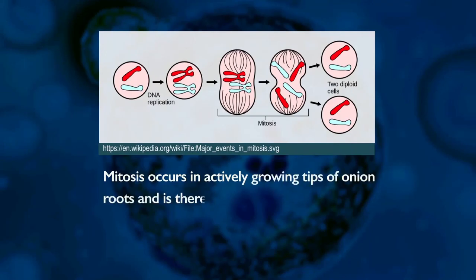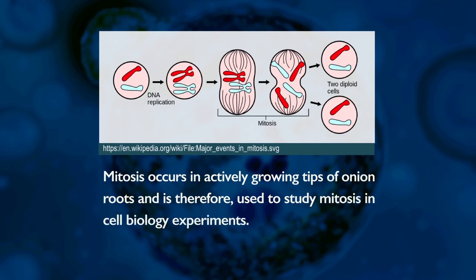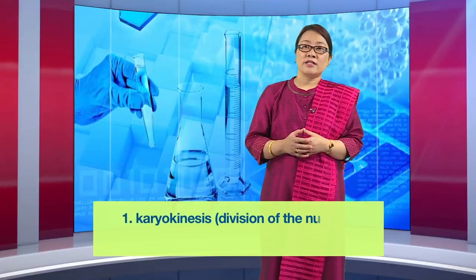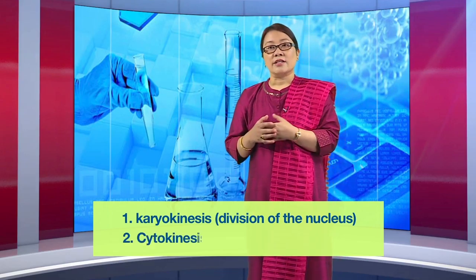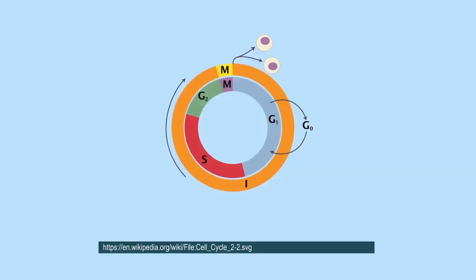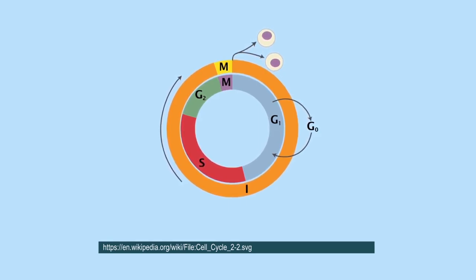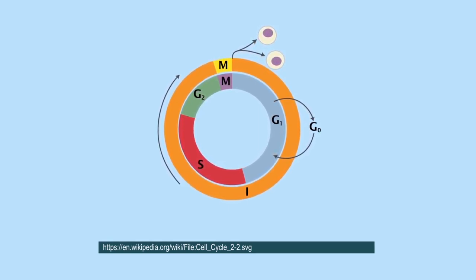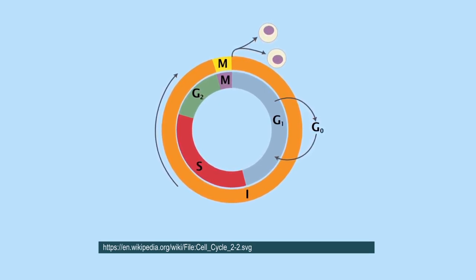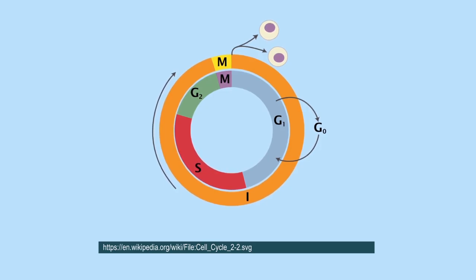Mitosis occurs in actively growing tips of onion roots and is therefore used to study mitosis in cell biology experiments. A eukaryotic cell nucleus divides into two daughter cells during mitosis, and each mitotic cell division consists of two events: karyokinesis or division of the nucleus, and cytokinesis or division of the cytoplasm. Mitotic cell division occurs in the M phase of the cell cycle, usually after DNA replication in the S phase of interphase, leading to the formation of two sister chromatids from each chromosome.